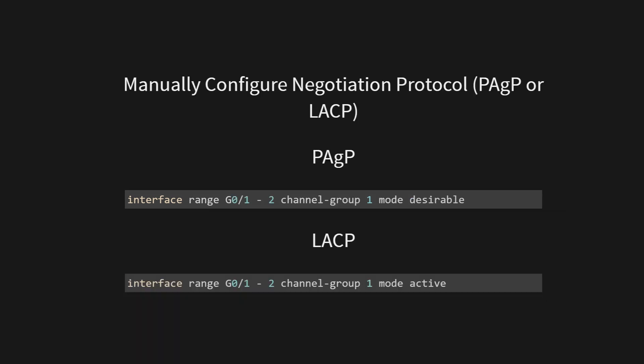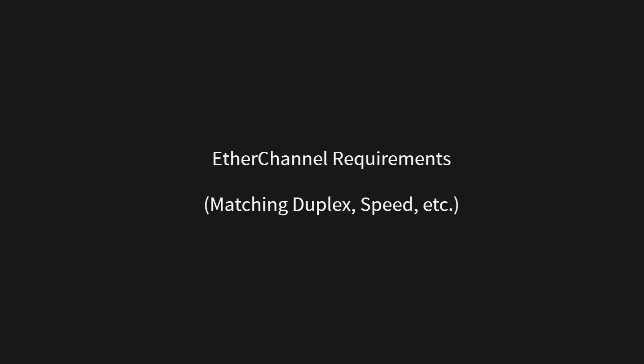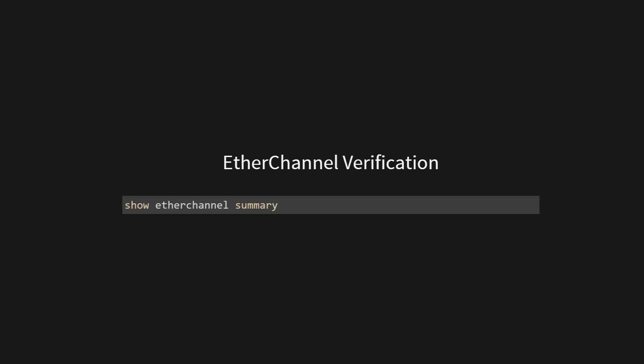You have the power to choose which negotiation protocol to use. Depending on the device's capabilities, you can manually set PAGP or LACP on both sides of the EtherChannel to ensure compatibility. For EtherChannel to work smoothly, all participating links must match in terms of speed, duplex settings, and VLAN configurations. Consistency across all links ensures proper data transmission and avoids potential conflicts. To check the status of EtherChannel interfaces, use the show etherchannel summary command — it provides information about the channel's state, members, and traffic distribution. You can also use show etherchannel port-channel for detailed statistics.